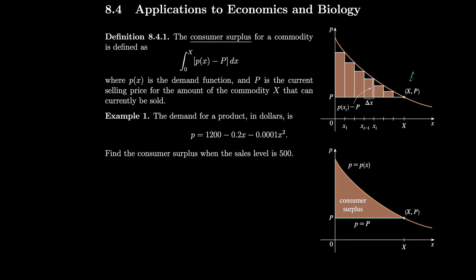On the demand function we have a certain point capital X, capital P that indicates the current selling price for a commodity and how many we can sell. In general, consumers might be willing to pay more than the current selling price, so this difference between what they're willing to pay and what they actually pay is called the consumer surplus.